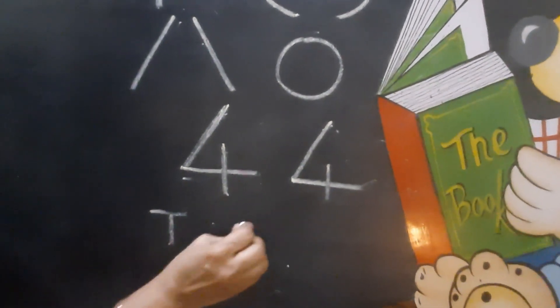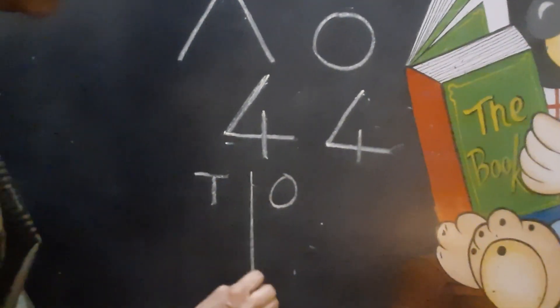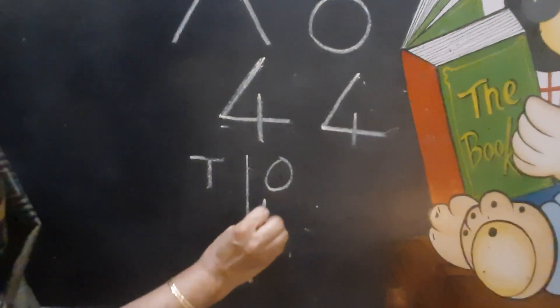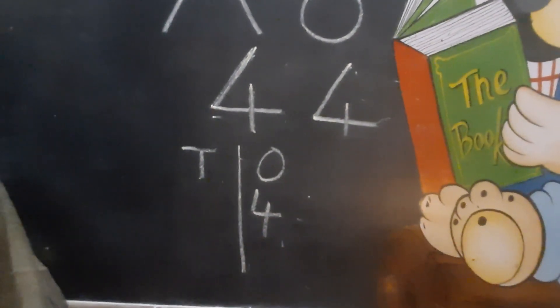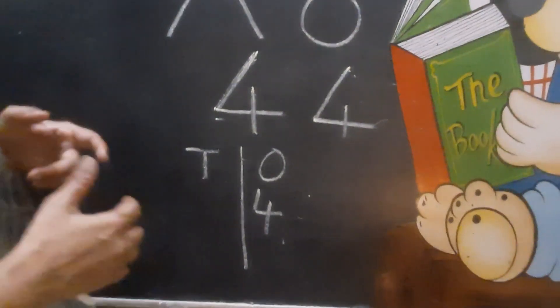We write number 4 always in the place of ones, because 4 is a single-digit number.